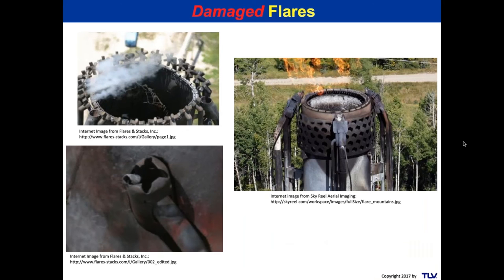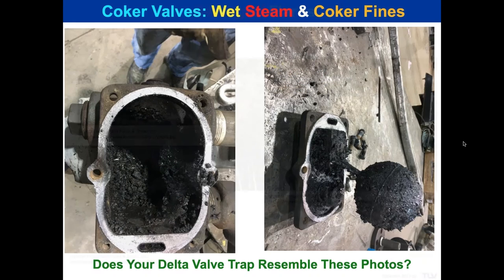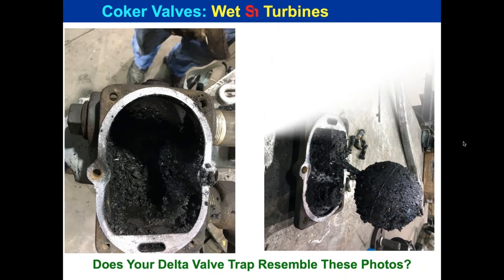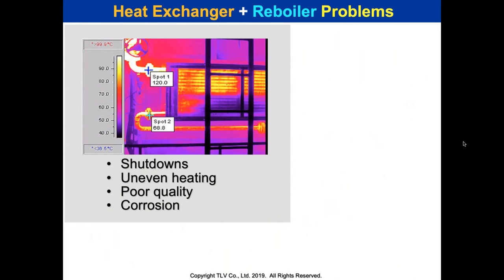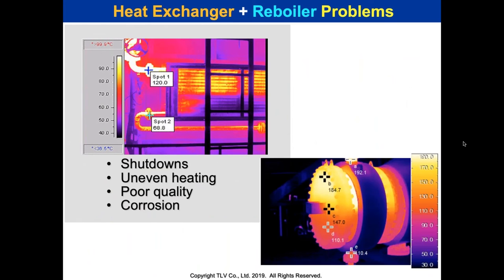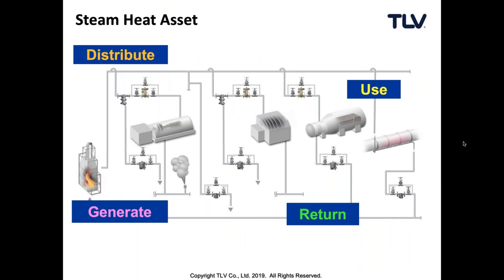When we talk about risk mitigation, we don't want to see damaged flares, flare-out instances, or damaged turbines. Stratified coils and heat exchangers are not good — they hurt the asset, hurt performance, create production problems, maintenance issues, and sometimes unscheduled shutdowns. Let's take a look at your steam heat asset: four areas — distribute, use, return, and generate. That asset is how you get heat to your production process.